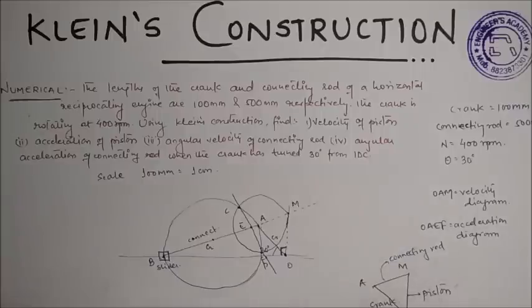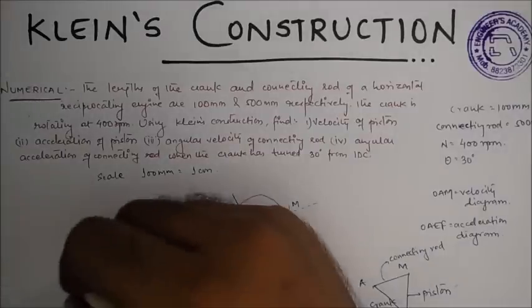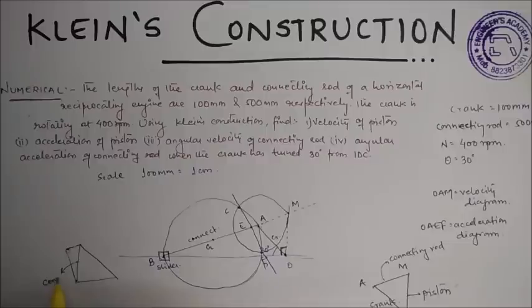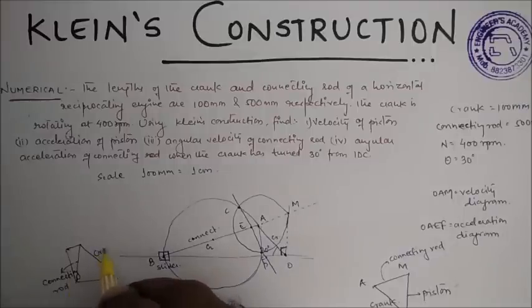Similarly, in the acceleration diagram, like this, this will be the connecting rod, this will be the crank, and this will be the piston.